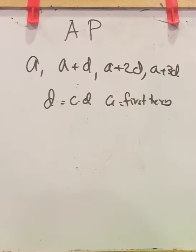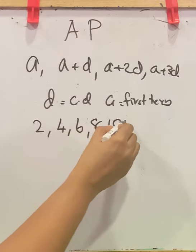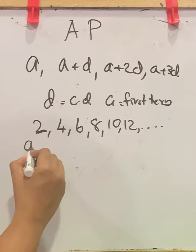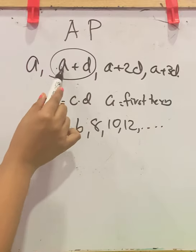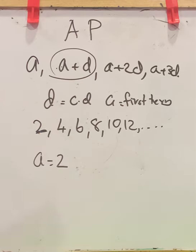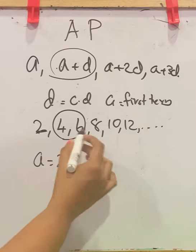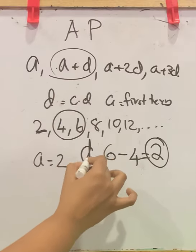Let us check with an arithmetic progression whether this is true. Consider 2, 4, 6, 8, 10, 12, and so on — this is an example of AP. Here A, the first term, equals 2. To find the common difference, take any two consecutive terms — let us take 4 and 6. Subtract the preceding term: 6 minus 4 equals 2. So here D is also 2.